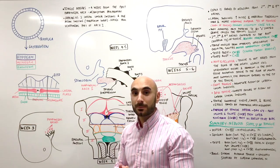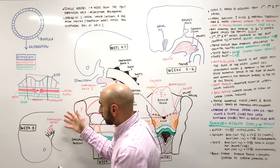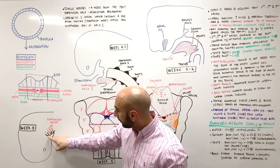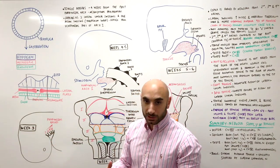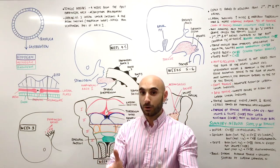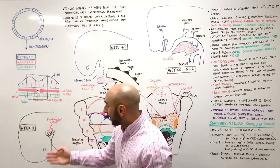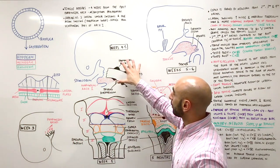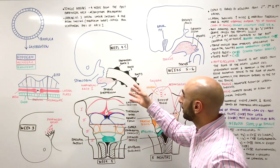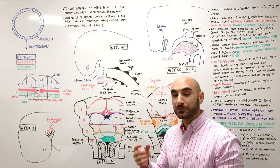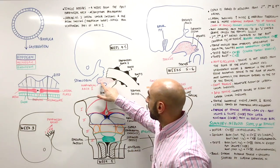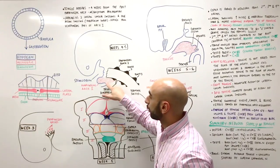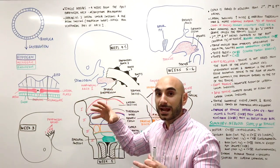Now let's start talking about the development of the tongue. Have a look at this week-three embryo where the head is over here and the tail is over here, with the pharyngeal arches visible. The tongue appears at approximately four weeks and it is a proliferation of the first pharyngeal arch, known as the mandibular arch. It is the proliferation of the mandibular arch that starts to create the tongue.